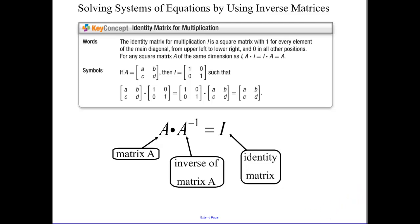Today we're going to be talking about solving systems of equations by using inverse matrices. First we need to learn about the identity matrix. The identity matrix is a square matrix with every element in the main diagonal starting up here, going diagonal, those are all ones.